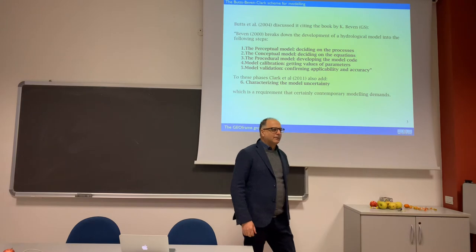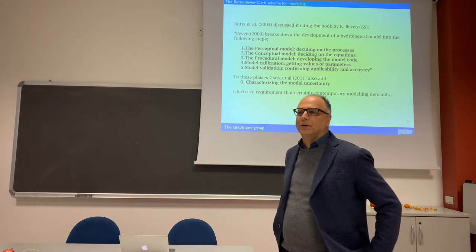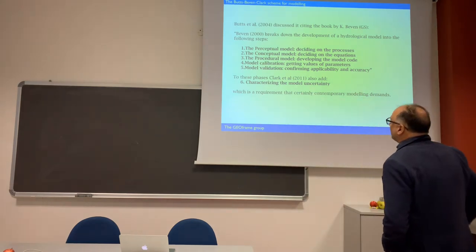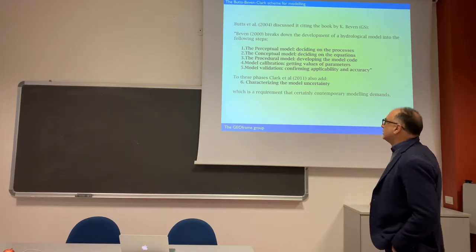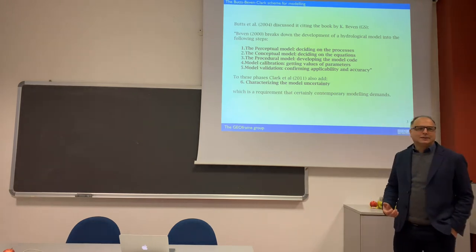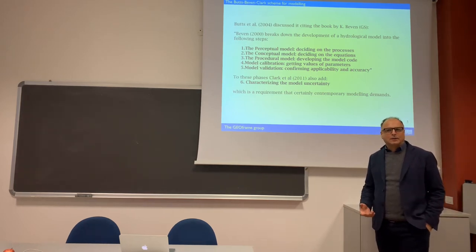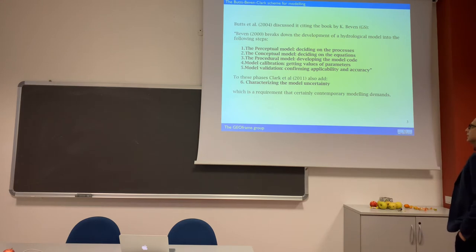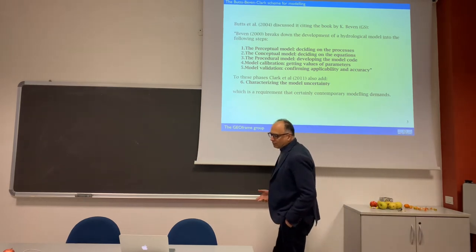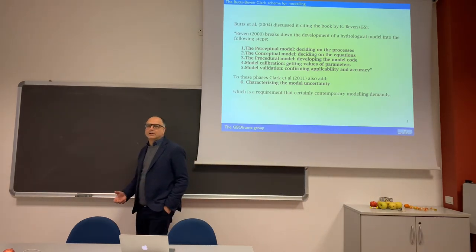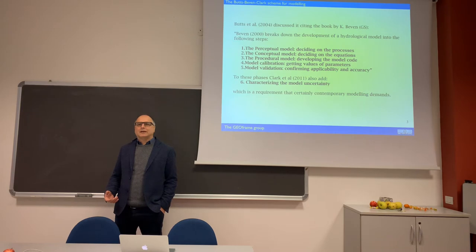The rationalized idea behind the choice of a model follows a framework attributed to Bats. First there is a perceptual model — you have an idea of what is going on in the landscape and decide which processes are important. Then there is a conceptual model, which involves deciding the equations. Not all models have exact equations; there are statistical models and now machine learning tools mixed with normal equations.